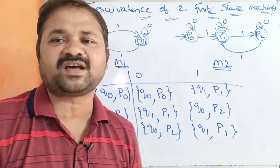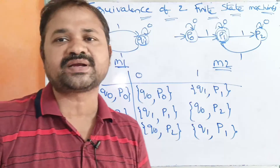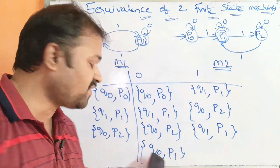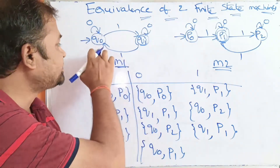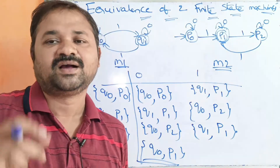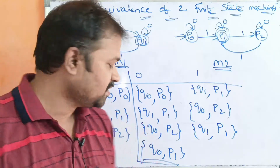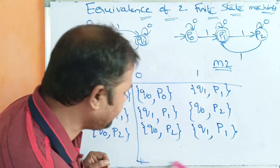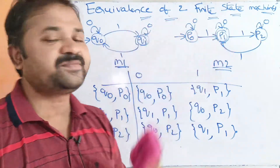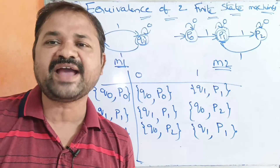All the states are explored and there are no new states. So we can say that these two finite automatas are equivalent. Note: if we had gotten a pair like Q0, P1 — where Q0 is an intermediate state and P1 is a final state — then the pair would contain one intermediate and one final state, and we would say those two finite state machines are not equivalent. But in this example, all pairs contain either only intermediate states or only final states, so the two finite state machines are equivalent.